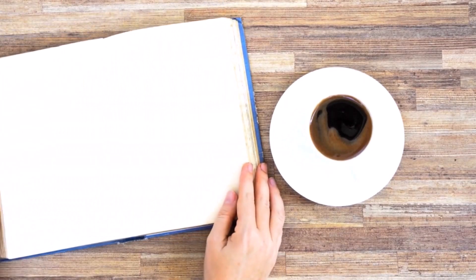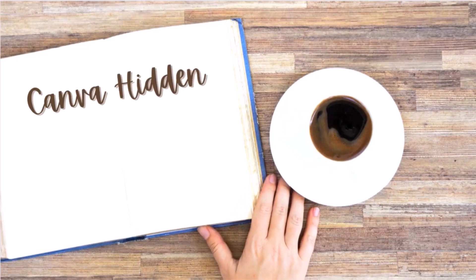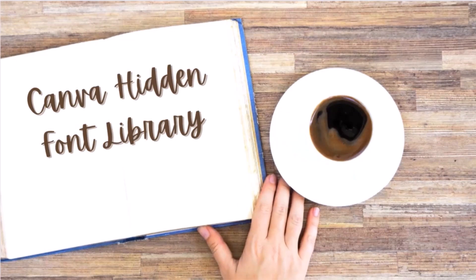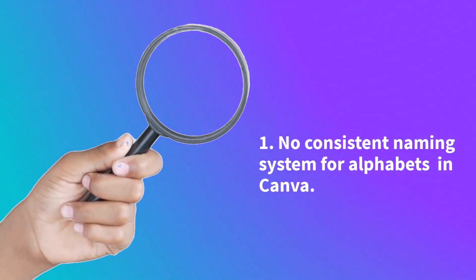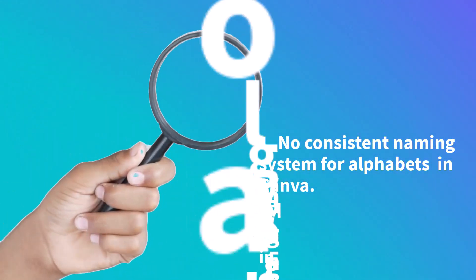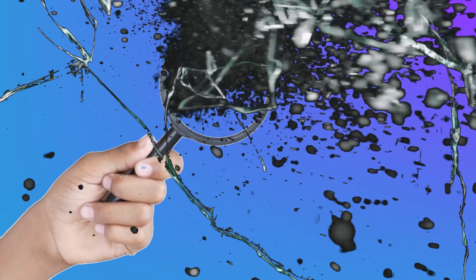I have spent a lot of time researching these alphabets. Some fonts are easy to find but others are a bit tricky and you have to dig down two or three layers to discover what you're looking for. This is mostly because there's not a consistent system for naming alphabets in Canva, and many of the designers from around the globe aren't fluent in English. This combination can make it difficult to find specific elements. So in this series I will cut through all of that confusion and show you how to find around 300 hidden fonts.